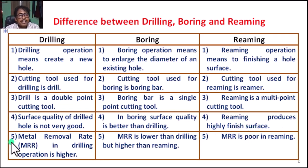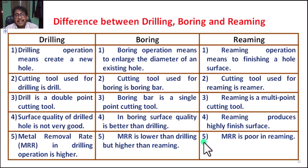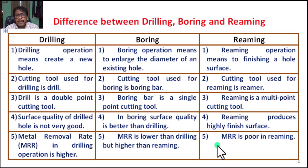Number five, for drilling: the metal removal rate (MRR) in drilling operation is higher. Number five, for boring: MRR — metal removal rate — is lower than drilling but higher than reaming. Number five, for reaming: the metal removal rate is poor in case of reaming, because it is a finishing operation and only very fine metal is removed.